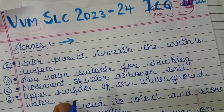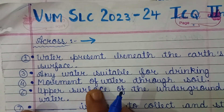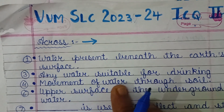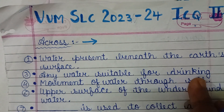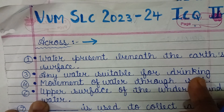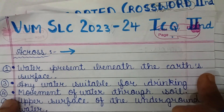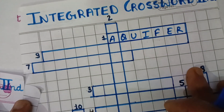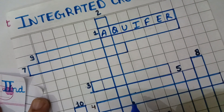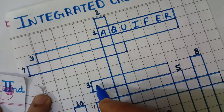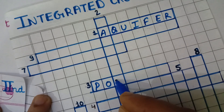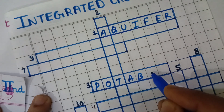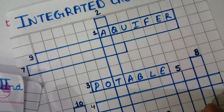Next question: any water suitable for drinking is known as potable. This is in third across. That is potable — P-O-T-A-V-L-E — potable water.